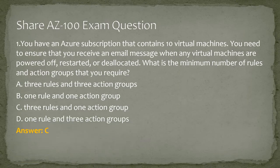Question 1. You have an Azure subscription that contains 10 virtual machines. You need to ensure that you receive an email message when any virtual machines are powered off, restarted, or deallocated. What is the minimum number of rules and action groups that you require? A. Three rules and three action groups. B. One rule and one action group. C. Three rules and one action group. D. One rule and three action groups. Answer: C.